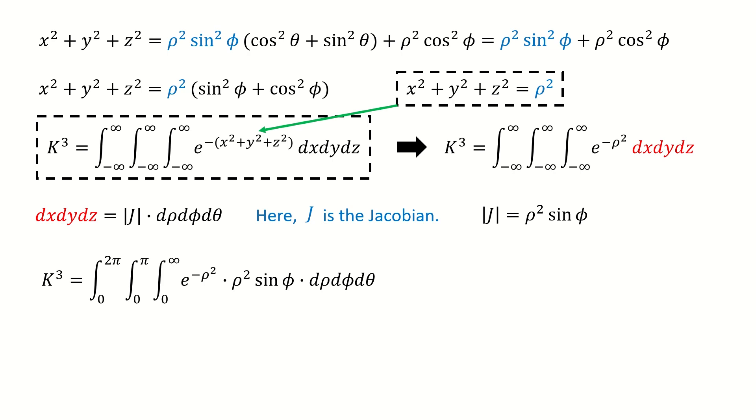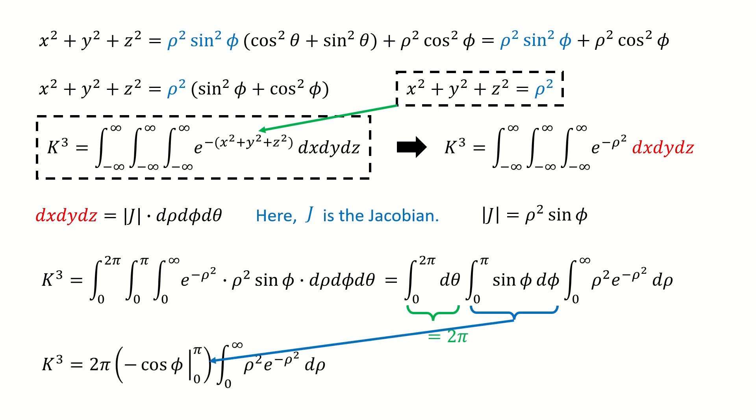Because rho, phi, and theta, these three variables are not coupled, we can split it into the product of three integrals. For the first term, this term is simple, equals to 2 pi. For the second term, we can integrate it and we got here. After plugging numbers, we can get the K cubed, which is here.